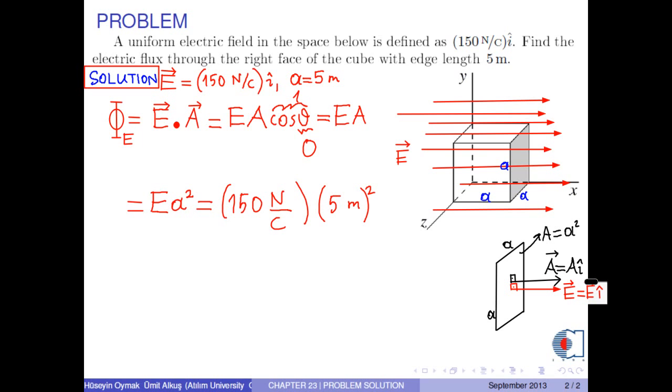As a result, the electric flux through the right face of the cube is obtained as 3750 Nm squared per Coulomb.